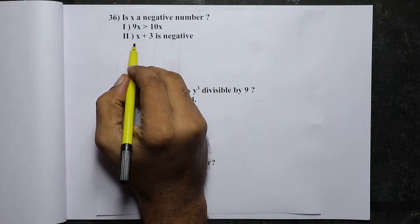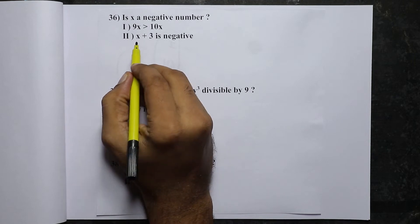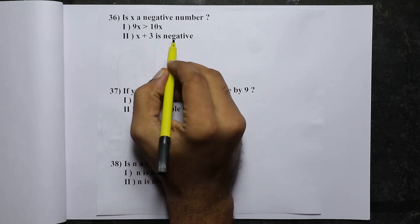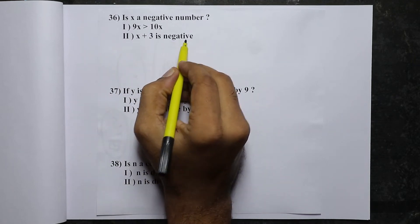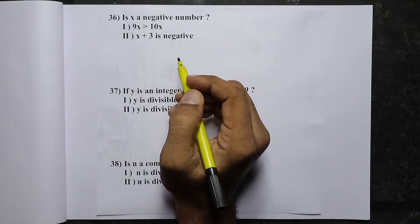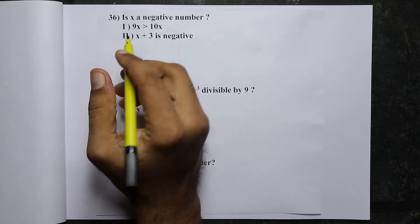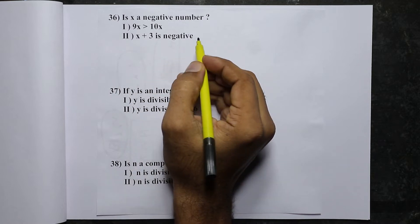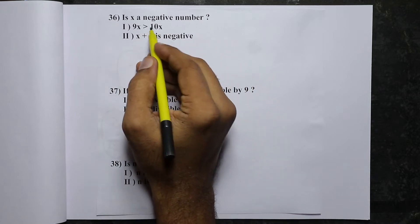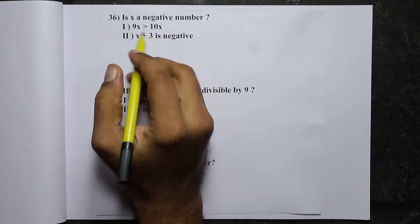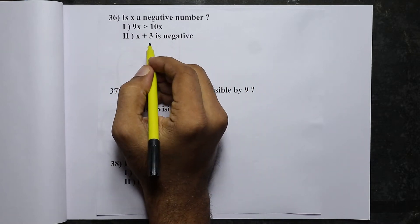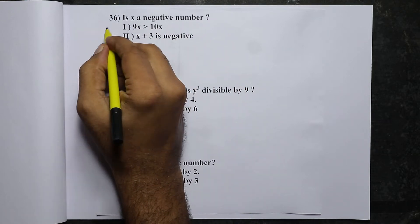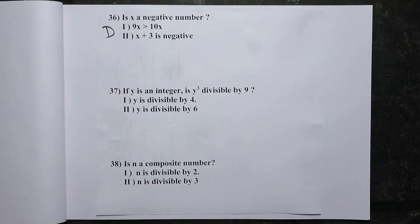Now look at the second statement: x plus 3 is negative. If x plus 3 is negative, then x also must be negative. So the second statement alone is also sufficient. Any of the statements will tell you yes, x is a negative number. So the correct answer is option D.